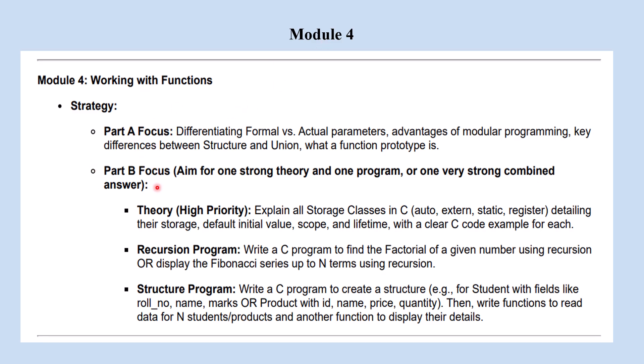Then coming to part B, aim for one strong theory and one program, or combined question. Program and theory combined questions they can also ask. For module 4 you have to learn this high priority question: explain all storage classes in C - auto, extern, static, register, detailing their storage, default initial value, scope and lifetime with a clear C code example for each. This is for part B, a high priority question.